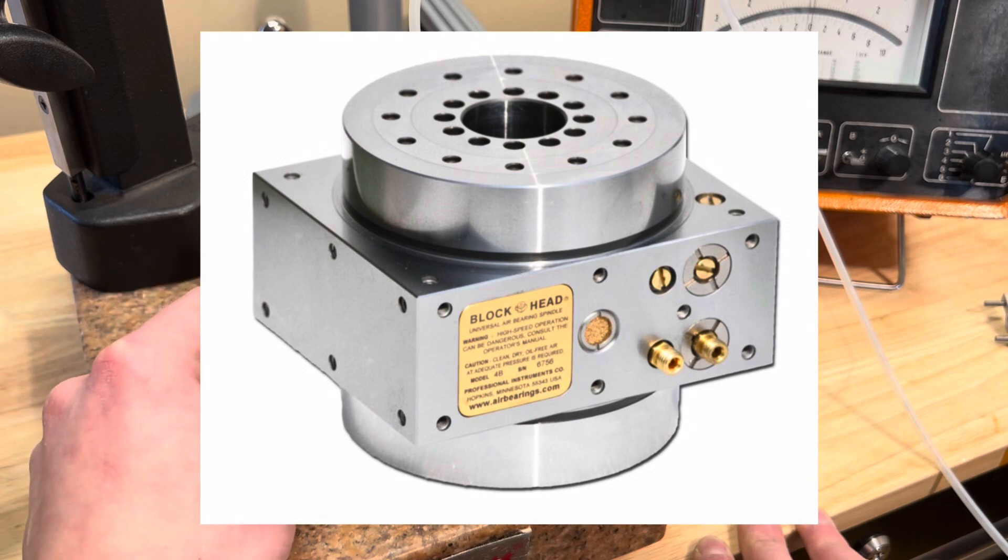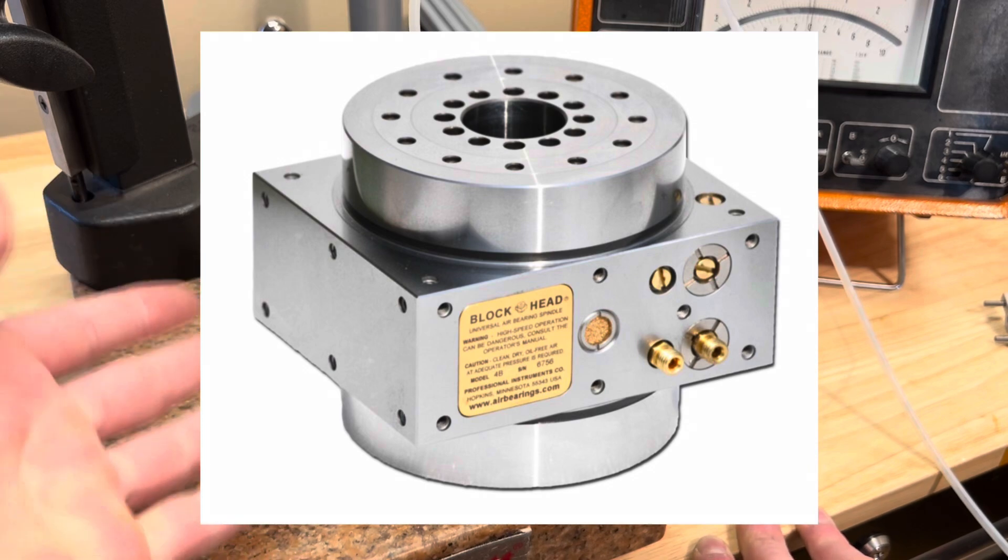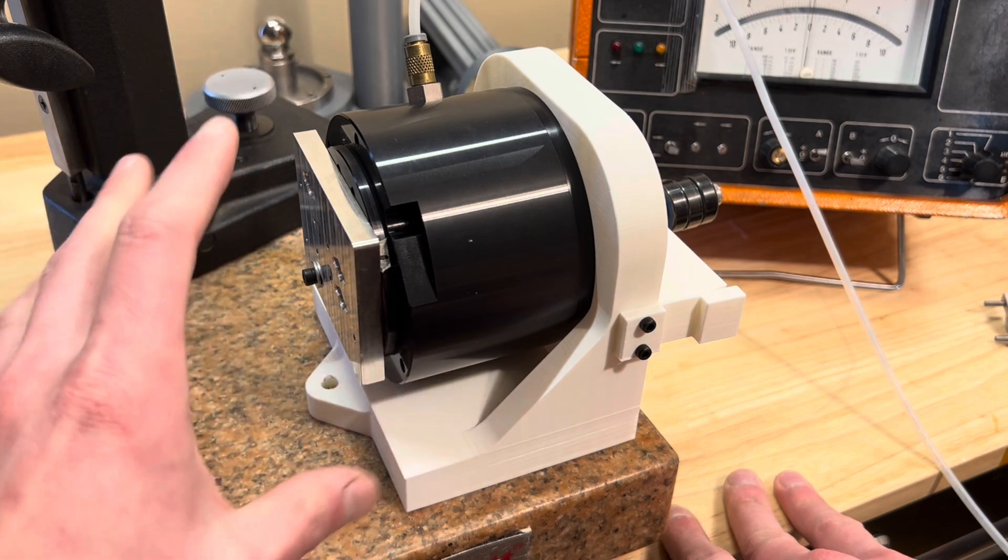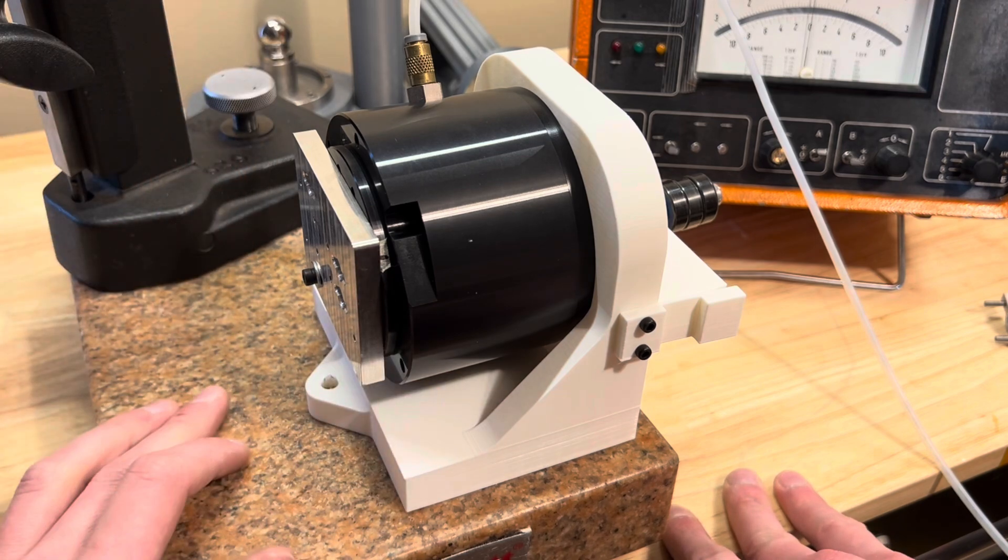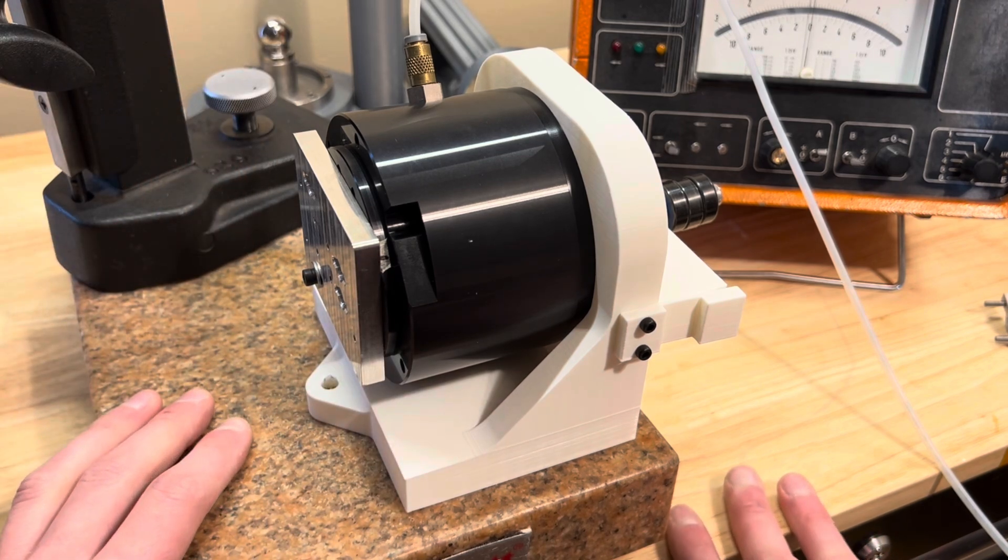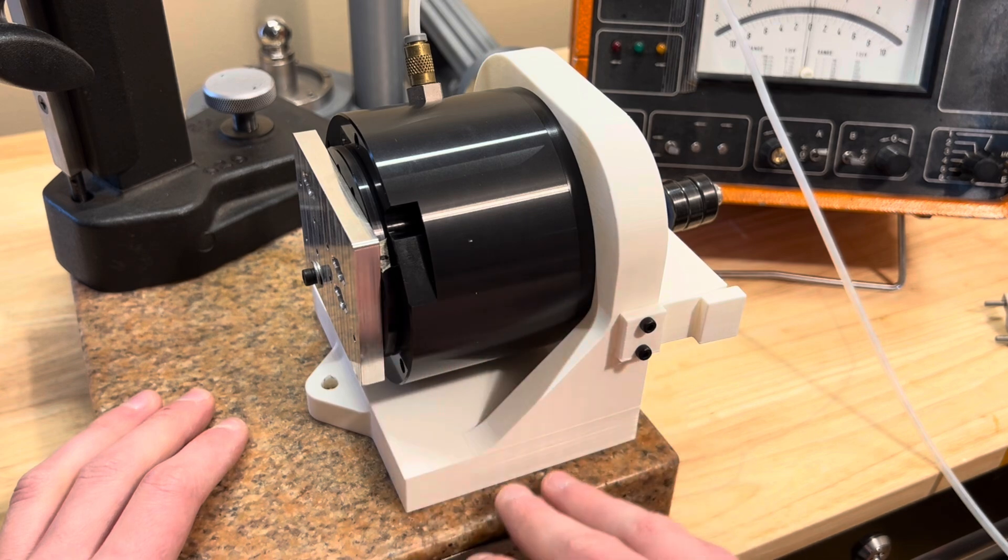Some of you may be familiar with it. Because of the precision of these things, we want that square body to be absolutely square, a reference on par with the accuracy of the spindle itself.